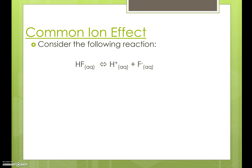What would happen if we were at equilibrium and we added additional hydrogen ions or fluoride ions to the solution? Le Chatelier's principle says that if we increase the concentration of something on the right side of the equation, it's going to shift the equilibrium towards the left, which means that the percent dissociation of hydrofluoric acid would go down with the addition of hydrogen ions or fluoride ions. This shift is called the common ion effect. We're adding more of one of the ions already in the solution, and this makes the solution less acidic by inhibiting the hydrofluoric acid from dissociating.